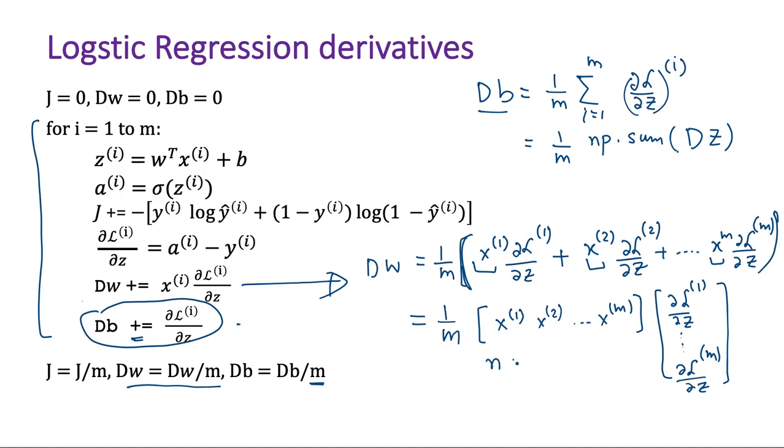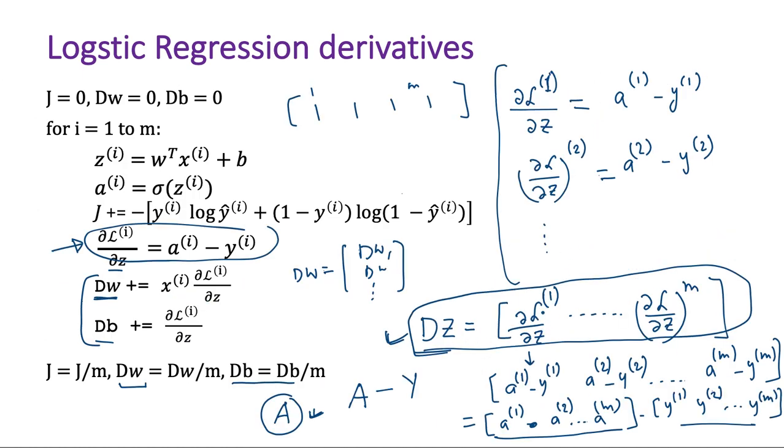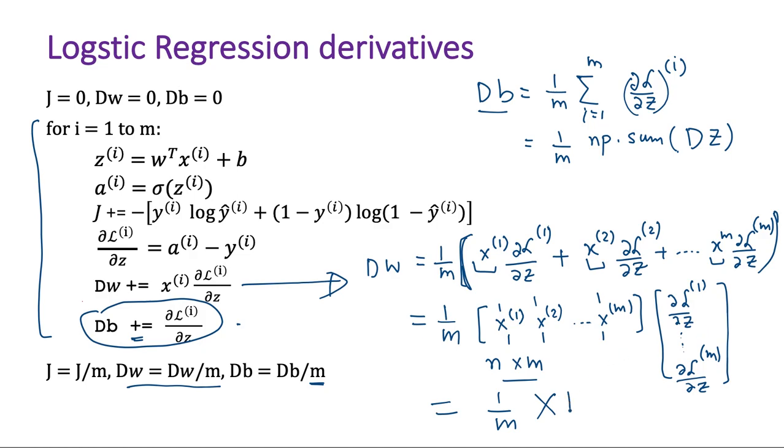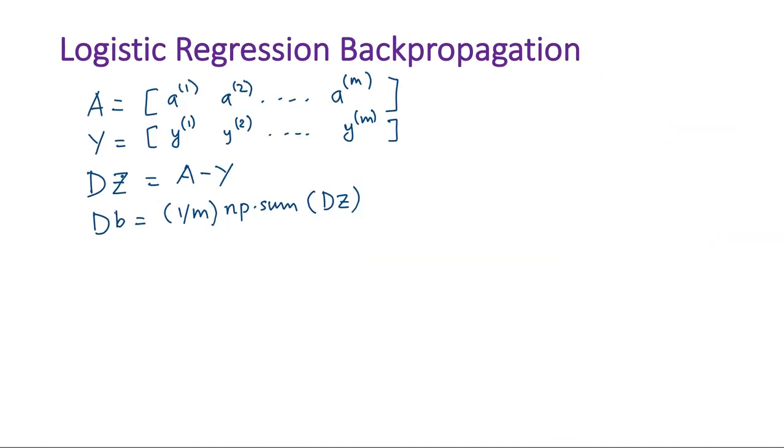And this is n cross m, this matrix we had seen this, and we had called it capital X in our earlier lessons, capital X. And we have 1/m before this. And what is this? Let's get back here - you see capital dZ is all of those ∂L/∂z in a row form. So if we do transpose of this we will get this thing, so it's dZ transpose. So now we have calculated this dW vector in one step in this vectorized form. So let's write it here: dW equal to 1/m X·dZ^T.